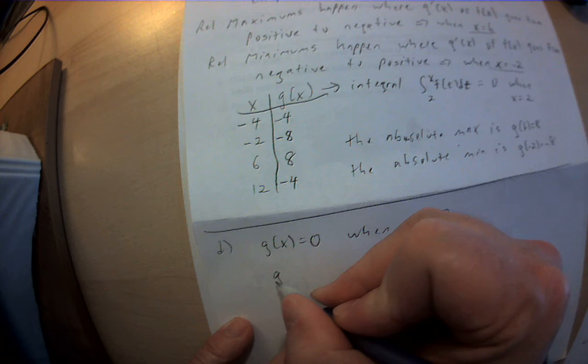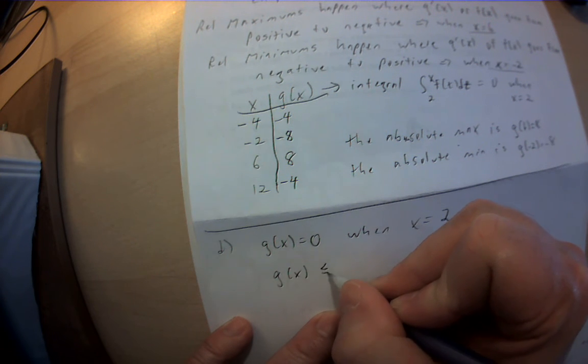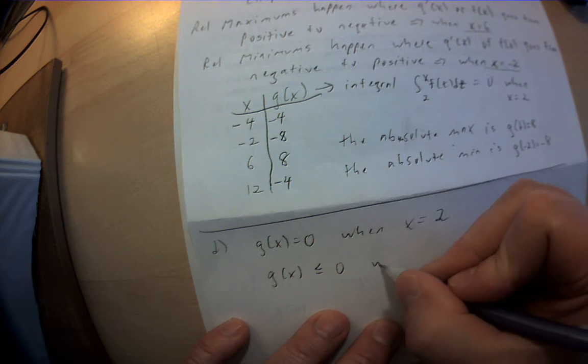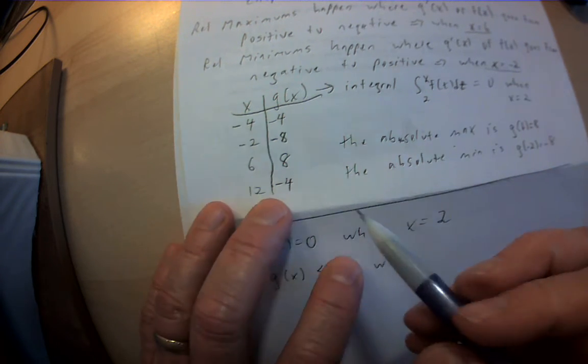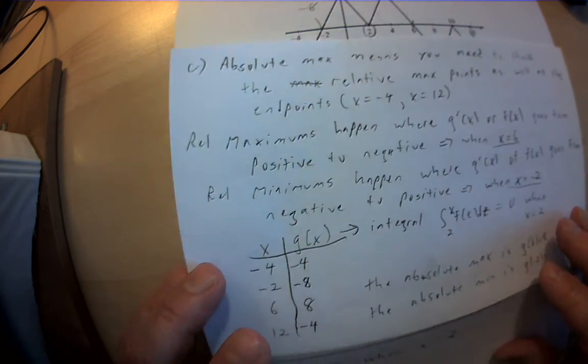So g of x is less than or equal to 0 when... So if I look up here in this table, negative 2, I'm at negative 8.